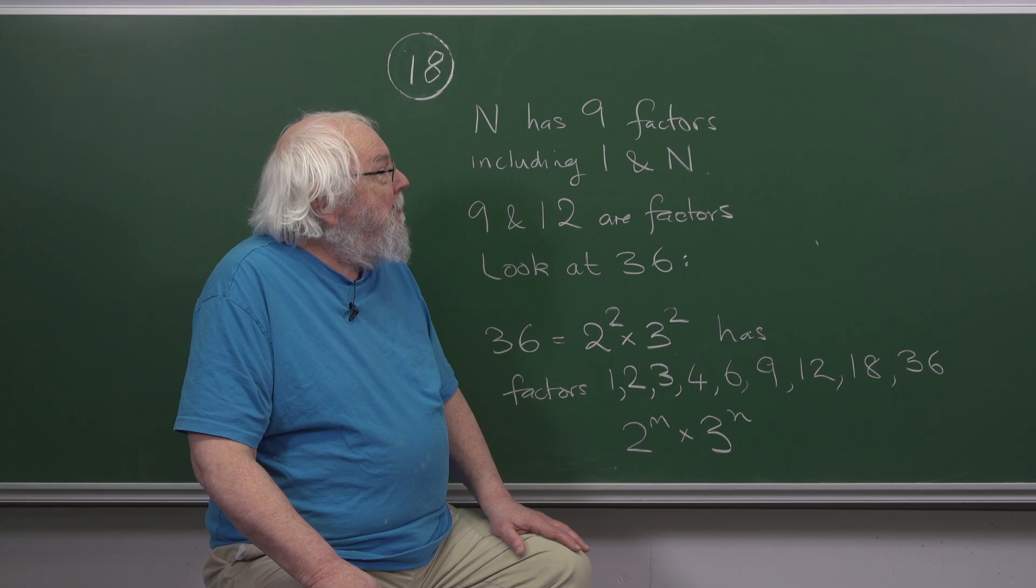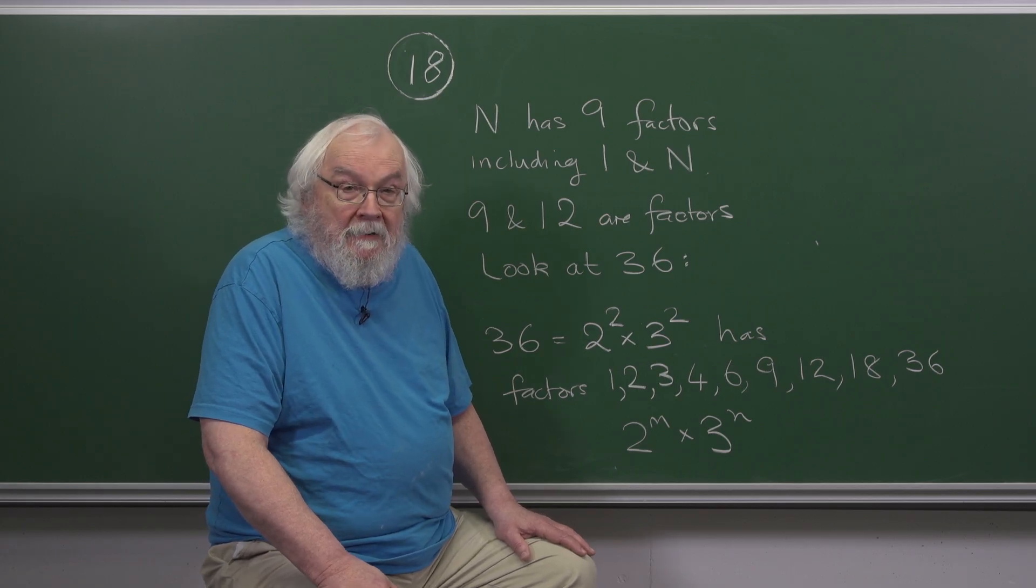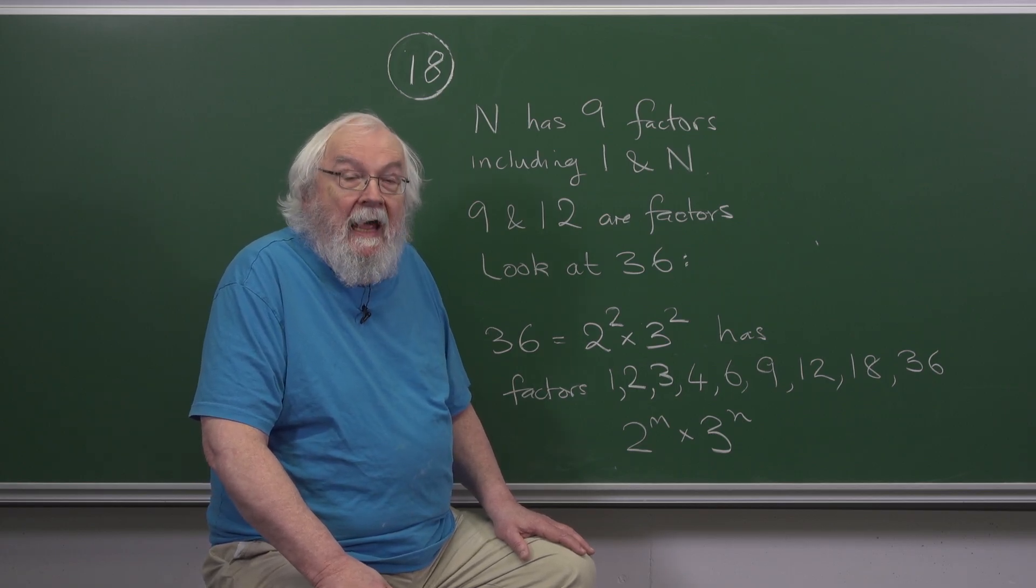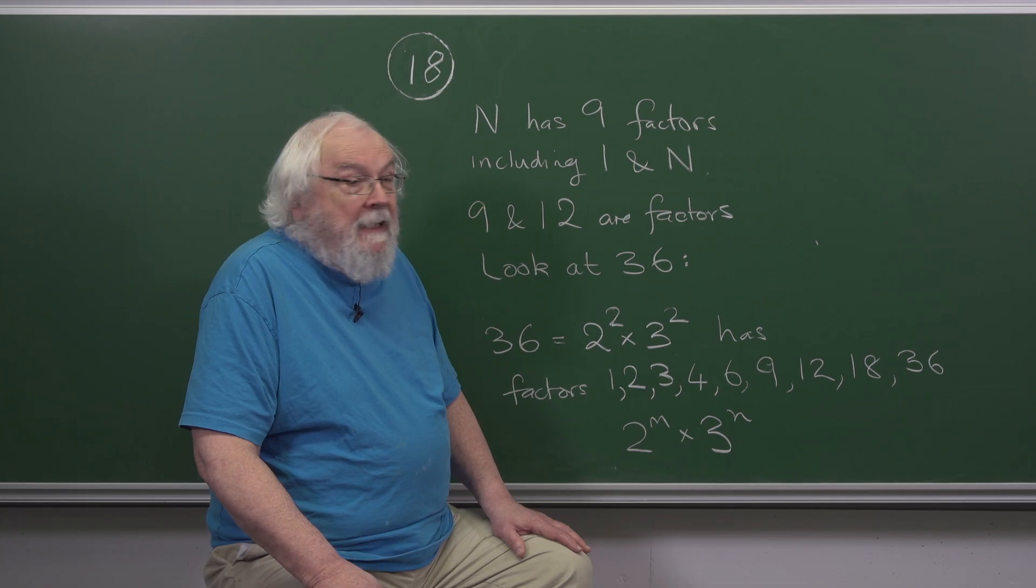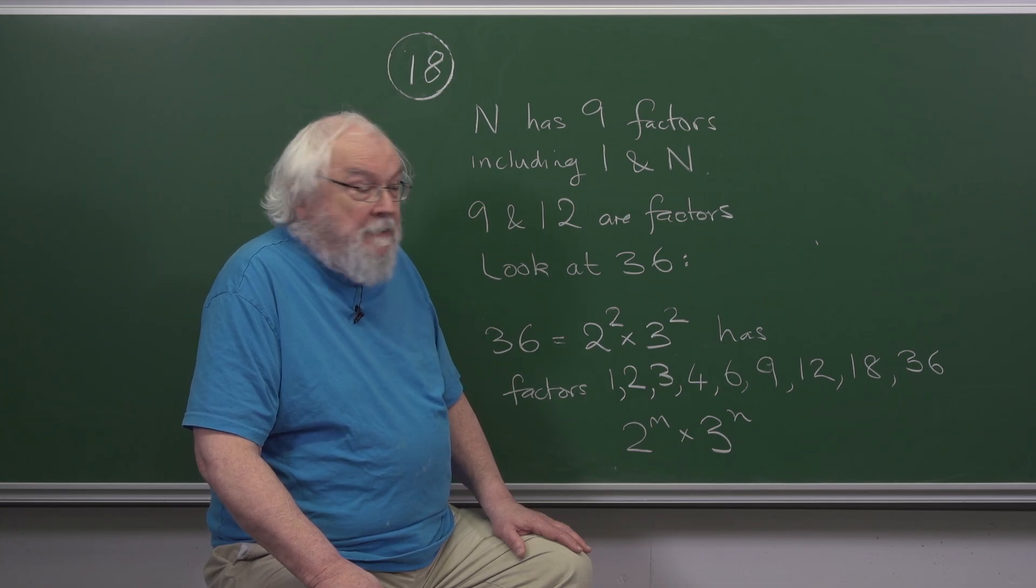In this problem we're looking for a number which has nine factors including itself and one, and has 9 and 12 as factors.